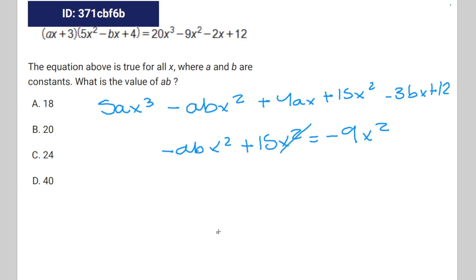You can cancel out the x² because all of them have it. So that's going to be 15 - ab = -9.